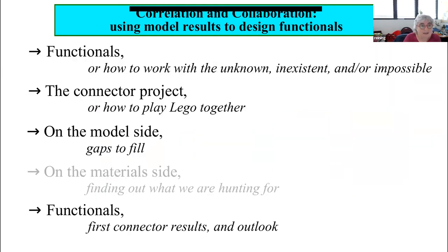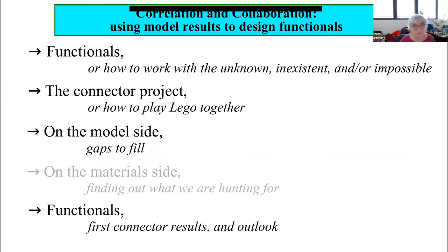I will start by giving you an introduction of what it means to work with functionals — please interrupt me if something is not clear. Functionals is actually a difficult topic, which is why I have a subtitle: 'how to work with the unknown,' because usually we have no clue how these functionals look like; sometimes they don't even exist. A way to overcome this problem is what we call the connector approach. To make the connector approach work, we need a lot of knowledge from models, so we also have to work on models. Matteo will then talk about a very particular model: the homogeneous electron gas.